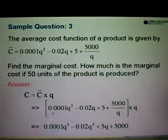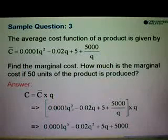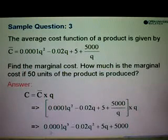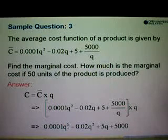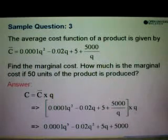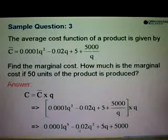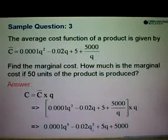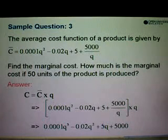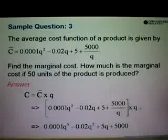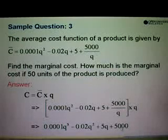So from here 0.0001q square times q will give us 0.0001q to the power 3. And then 0.02q times q will be equals to 0.02q square. And 5 times q will give us 5q. And 5000 over q times q we can cancel the q. So remainder 5000.